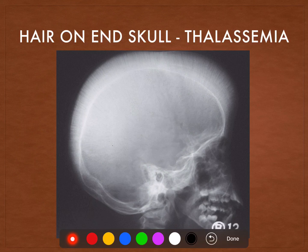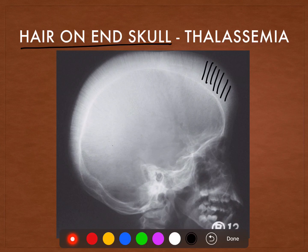This skull is known as the hair on end skull. Hair on end skull means there is diploic space widening, which is because of extramedullary hematopoiesis. This can be seen in any hemolytic anemia, but it is most statistically associated with thalassemia — hair on end skull in thalassemia.